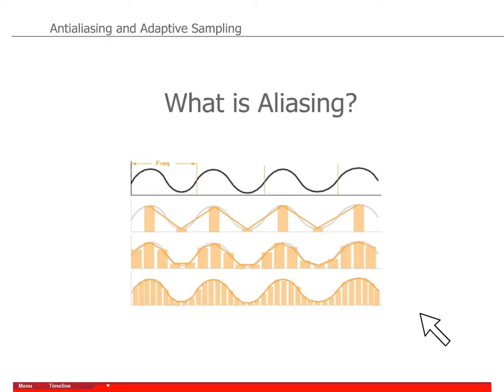This is pretty much what is happening also in 2D space when rendering an image. The actual pixel may cover a very complex part of the scene, and inside what the pixel covers, there's a lot of detail — and those details can be seen as frequency.